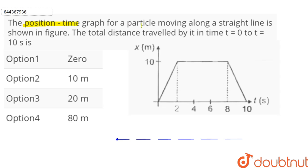The position-time graph of a particle moving along a straight line is shown in the figure. The total distance traveled by it in time t equal to 0 to t equal to 10 seconds is: option 1, 0; option 2, 10 meters; option 3, 20 meters; and option 4, 80 meters.